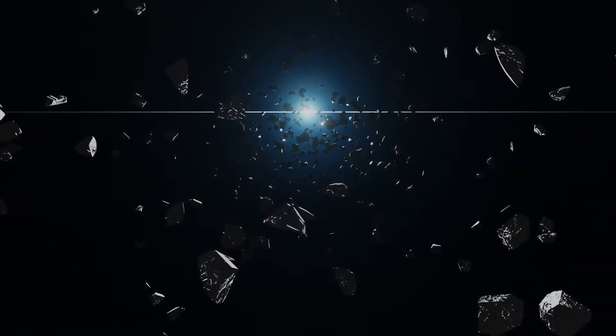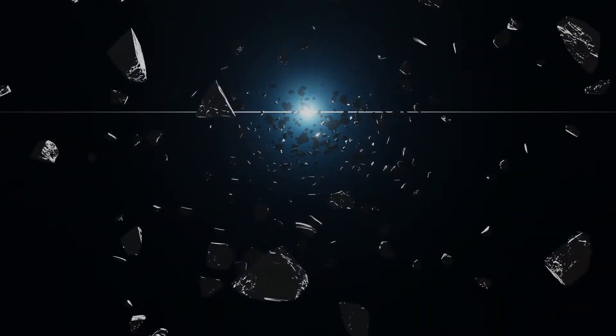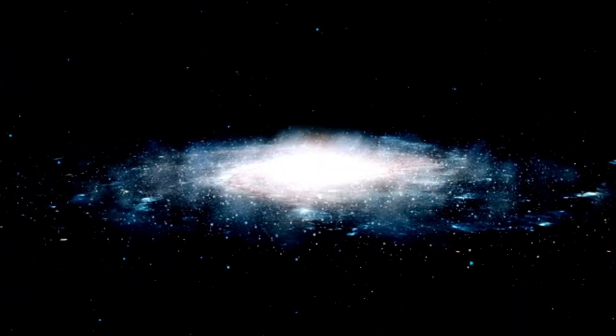Now let's discuss Proxima Centauri, the star that Proxima b circles. Proxima Centauri is part of the Alpha Centauri triple star system. This system includes Rigel Centauri, otherwise known as Alpha Centauri A and B. Together, these stars make the closest star system to our own solar system.